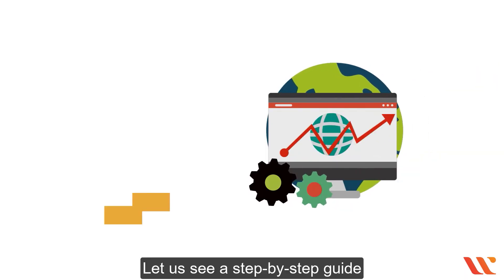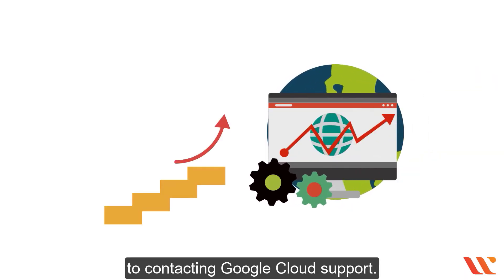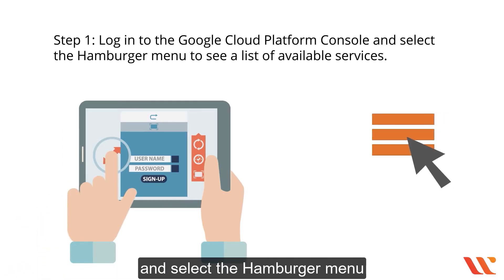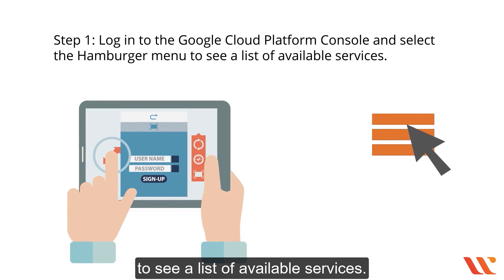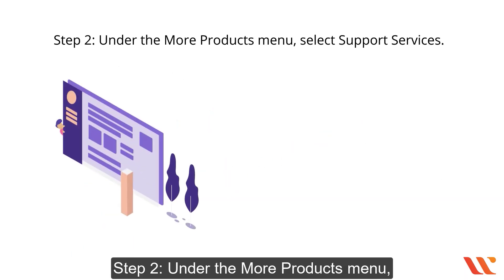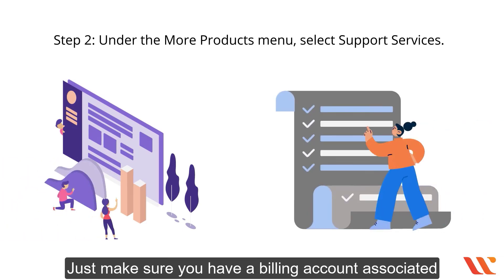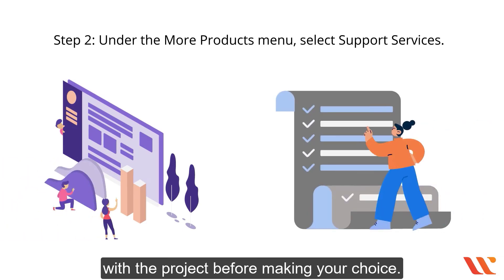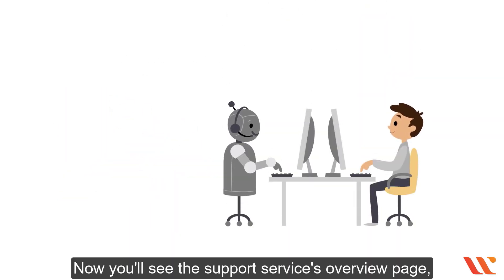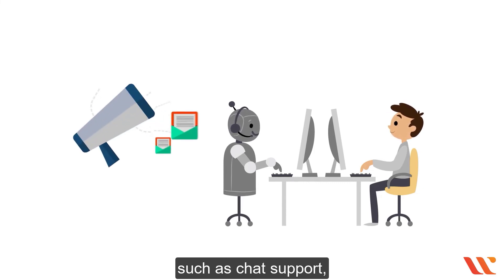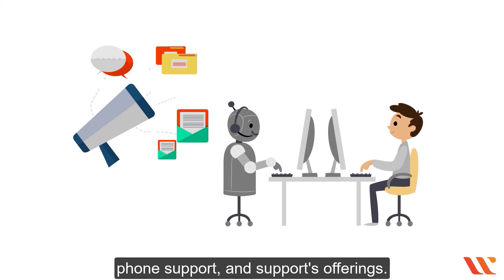Here is a step-by-step guide to contacting Google Cloud support. Step one: log into the Google Cloud Platform console and select the hamburger menu to see a list of available services. Step two: under the More Products menu, select Support Services — make sure you have a billing account associated with a project before making your choice. You'll then see the support services overview page with all relevant information such as chat support, phone support, and support offerings.